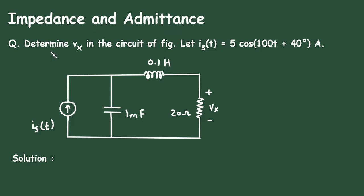Question: determine Vx in the circuit of the figure. Let Is(t) = 5cos(100t + 40°) ampere. For this circuit we have to find Vx.